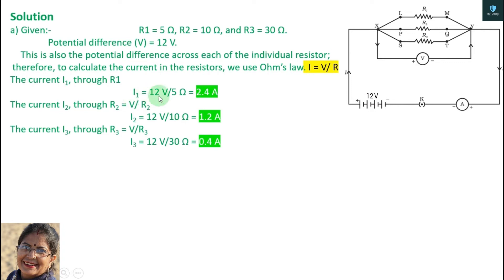I equals to 12 volt upon 5 ohm. Here is 5 ohm. Calculate the current unit. For I2, 12 volt will be the same. Here is the same voltage.